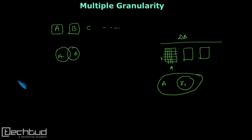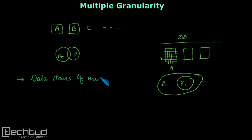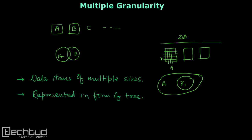In multiple granularity we have various levels of data sizes. We can represent this granularity or level of data in terms of a tree. So if we want to represent the structure we have just studied in the form of a tree, at the top we will have the database.